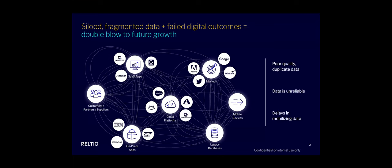Today, in the average enterprise, there are 446 different applications with distinct silos of data that are operating. This is becoming even more complex. It's getting harder every day to take advantage of all the different SaaS apps, MarTech apps, cloud platforms, on-prem stuff, and legacy databases across your enterprise. This is really becoming a barrier to driving the digital outcomes that organizations want.